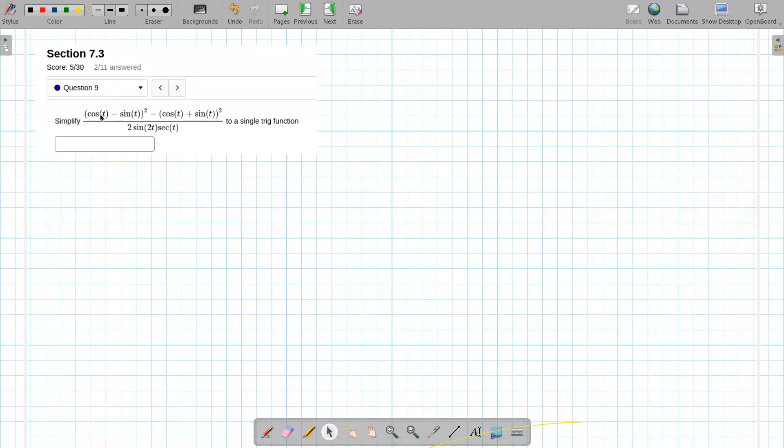All right, in the numerator, we have cosine t minus sine t, and that is squared, and we have a minus, cosine t plus sine t, all squared.